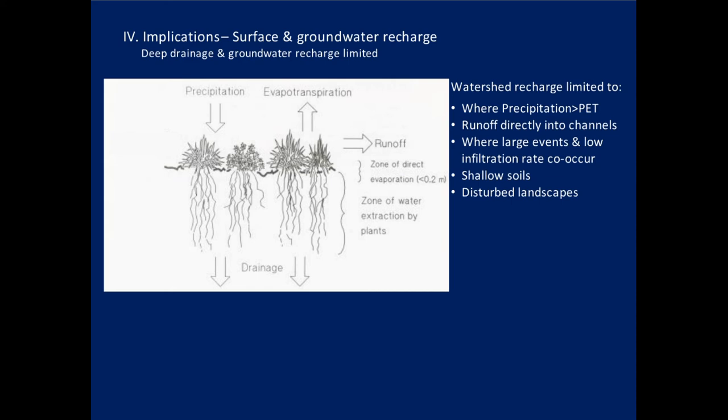What are the implications for groundwater recharge? Within our arid ecosystems, watershed recharge is very limited. It's only going to occur in certain situations: at higher elevations in forested areas where precipitation exceeds evapotranspiration; where runoff flows directly into a channel; where large events occur in areas with low infiltration or shallow soils where storage capacity is exceeded during snowmelt or early spring events. As I indicated earlier, disturbed landscapes — cheatgrass-infested sites, burned areas, heavily grazed areas — also present increased potential for recharge.